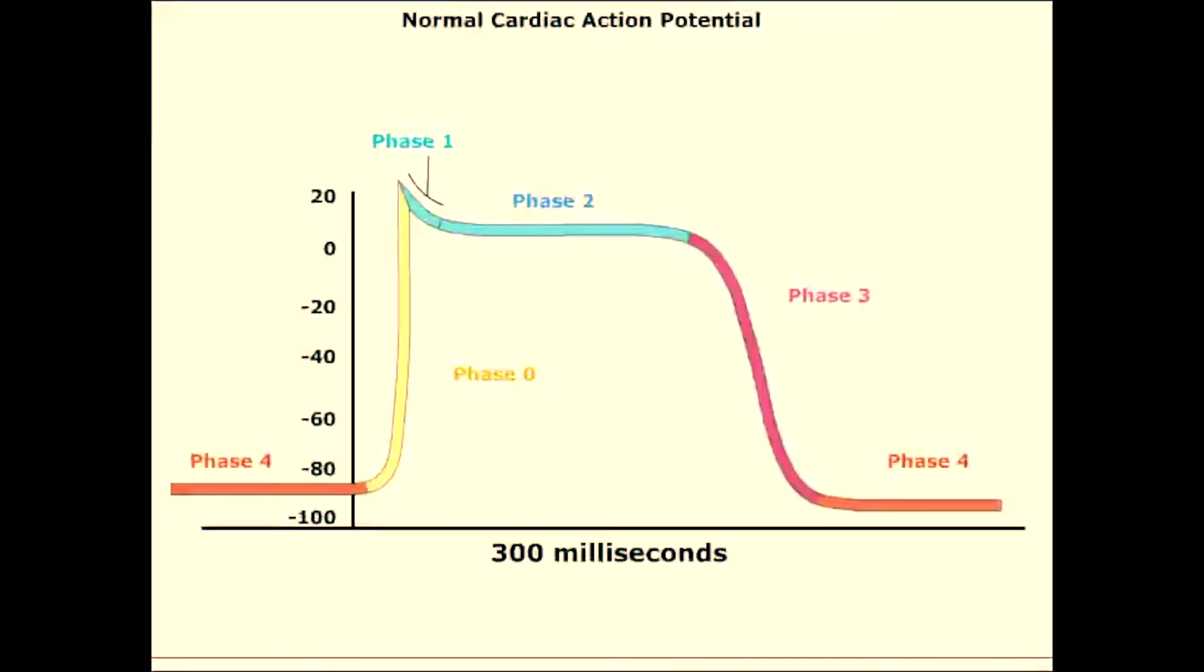We will now review the action potential of a ventricular myocyte, a fast response type of muscle. The action potential of a ventricular myocyte occurs in five phases, numbered 0 to 4. Phase 4 is the resting membrane potential. It's about minus 85 to minus 95 millivolts in normal cardiac muscle, and is the membrane potential when the cell is not being stimulated.